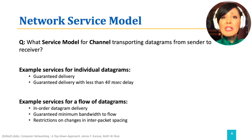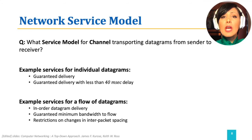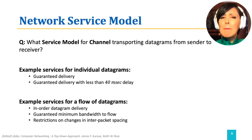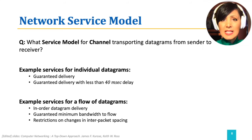Services could also be delivered for a flow of datagrams. Examples include in-order datagram delivery, guaranteed minimum bandwidth for a flow of datagrams, and guaranteed limits on changes of inter-packet spacing. What service models are available to provide these kinds of services to a datagram and the flow of datagrams?